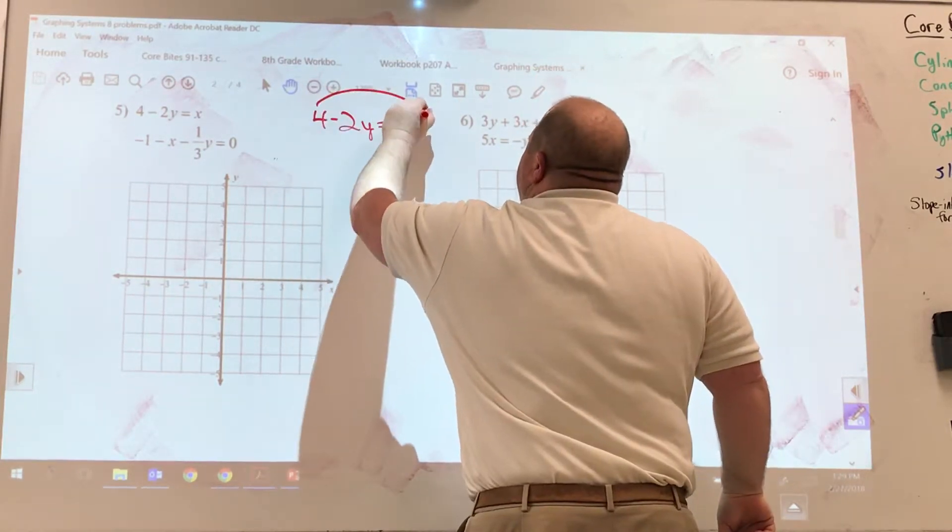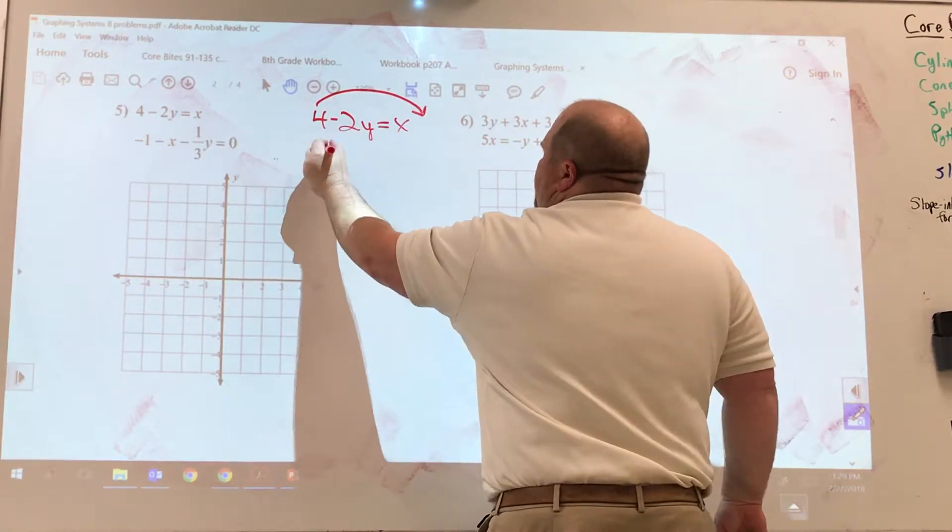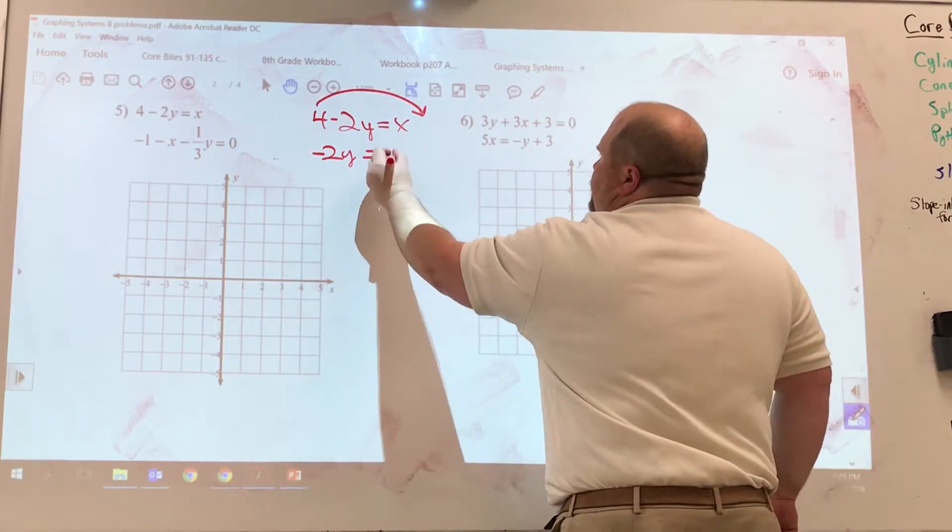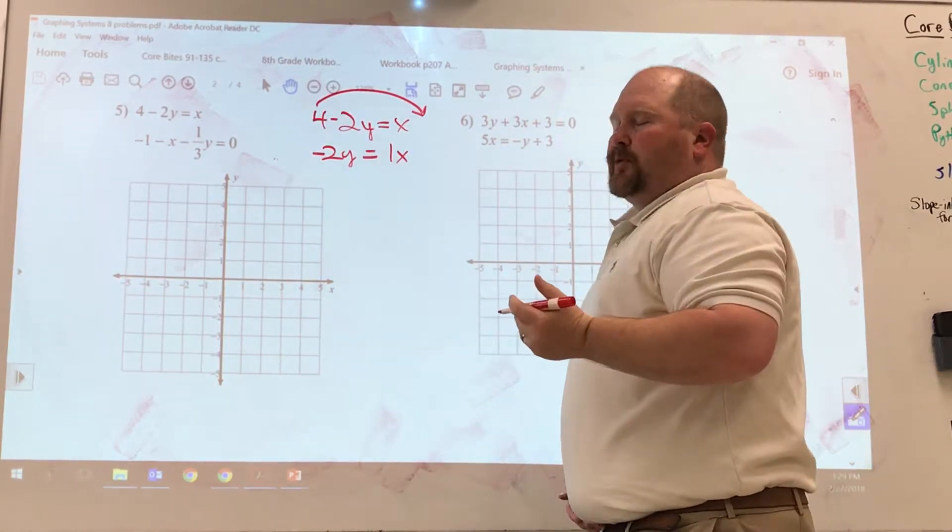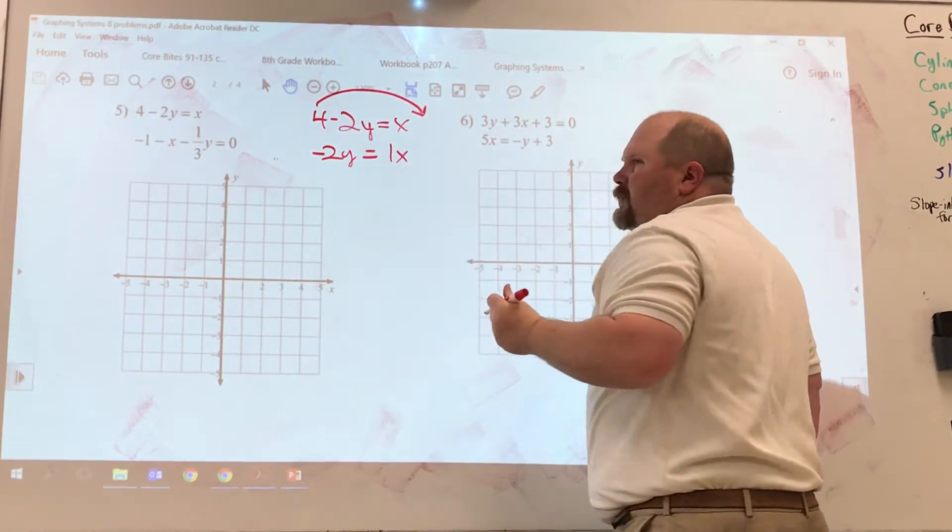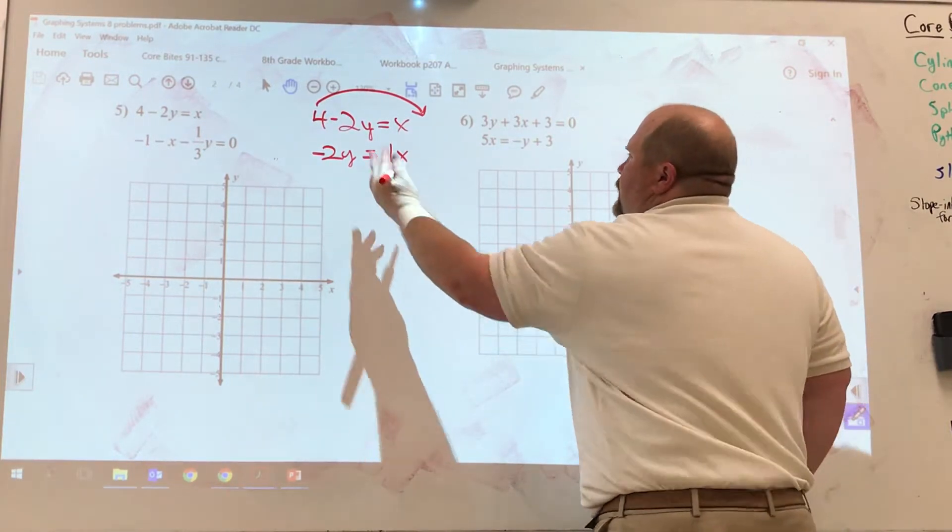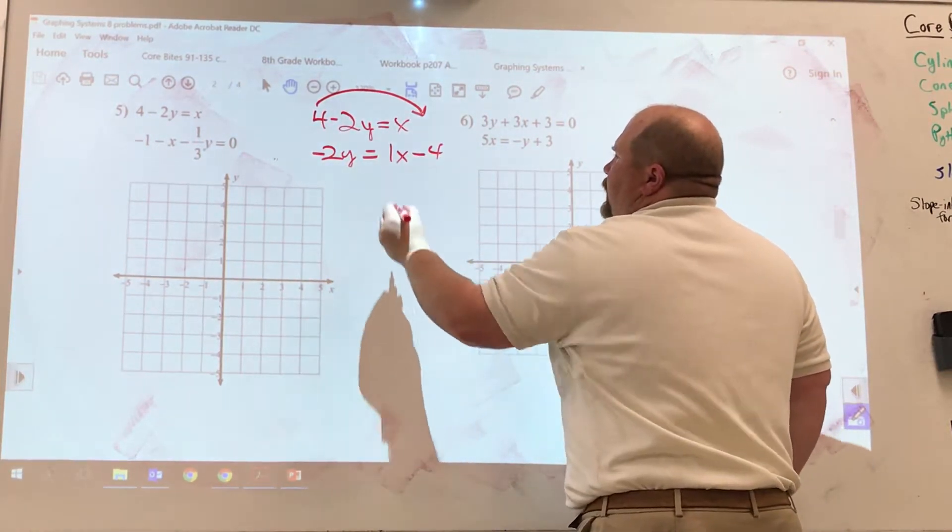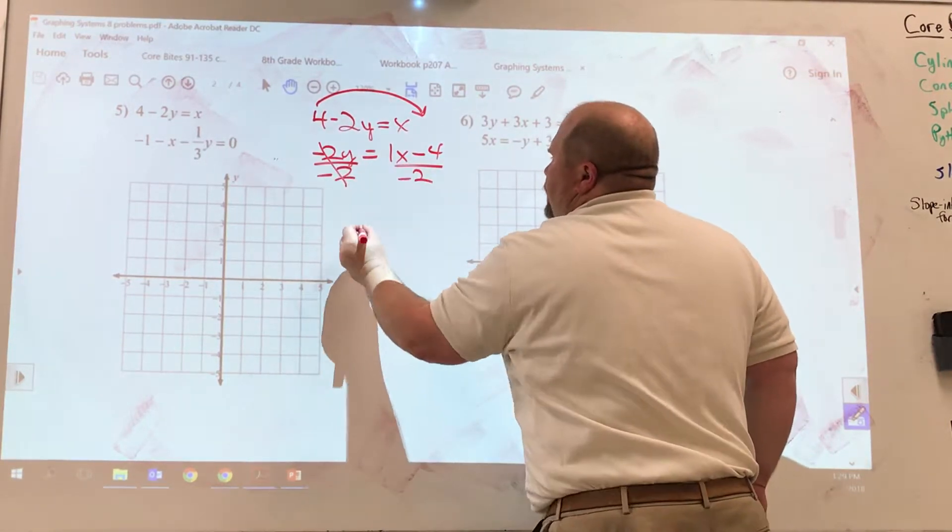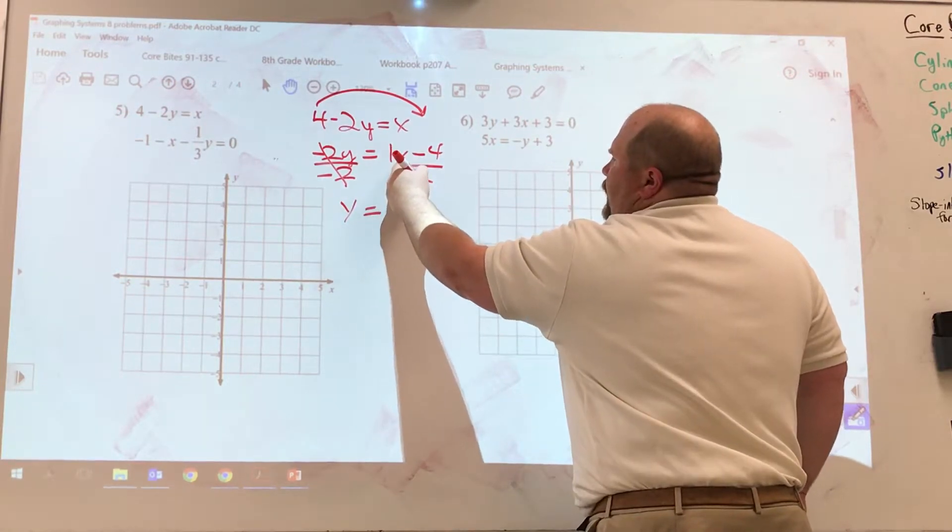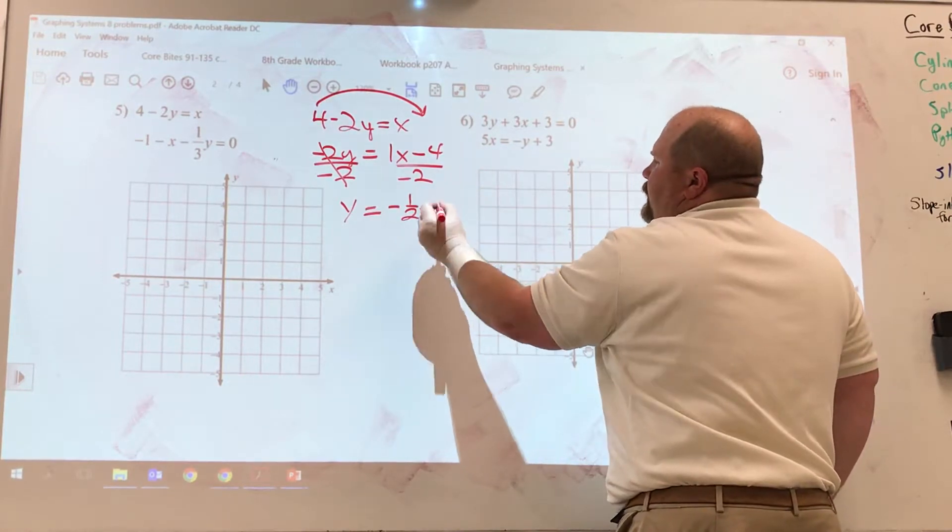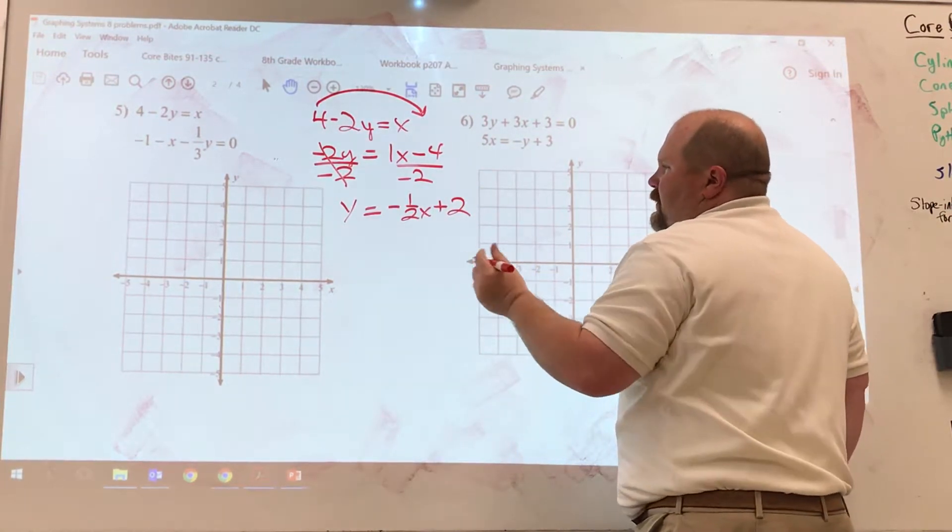This positive four needs to be over here. And so negative two y just comes down. There's my equal. x is okay. I'm going to write it as a one x, and that's going to help me with my slope. And then this positive four, when it comes over to this side of the equal, any time you cross the equal, you must change the sign. So this positive four comes over as a negative four. The last step is to divide everything by negative two because we want to cancel that out. So we get y equals one divided by negative two is negative one-half x. Negative four divided by negative two is going to be positive two. This one is now ready to graph.